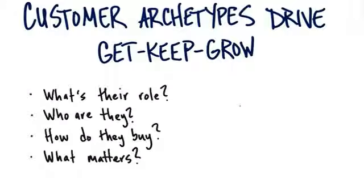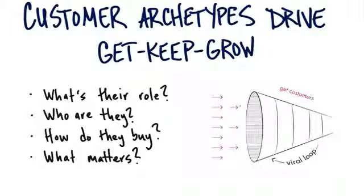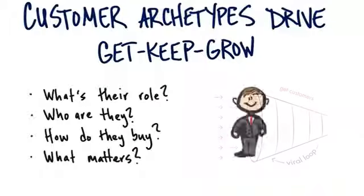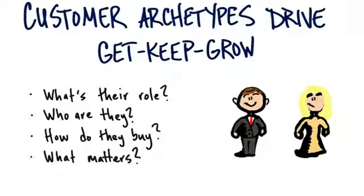Once I understand who my archetypes or personas are, the next thing I want to figure out is how do I get them into this funnel? Regardless of whether it's web or mobile, I need to somehow figure out how to get the interests of my customer archetypes — Dave in a major urban area, Sally in the Midwest, or someone in China or India. How do I get them interested?